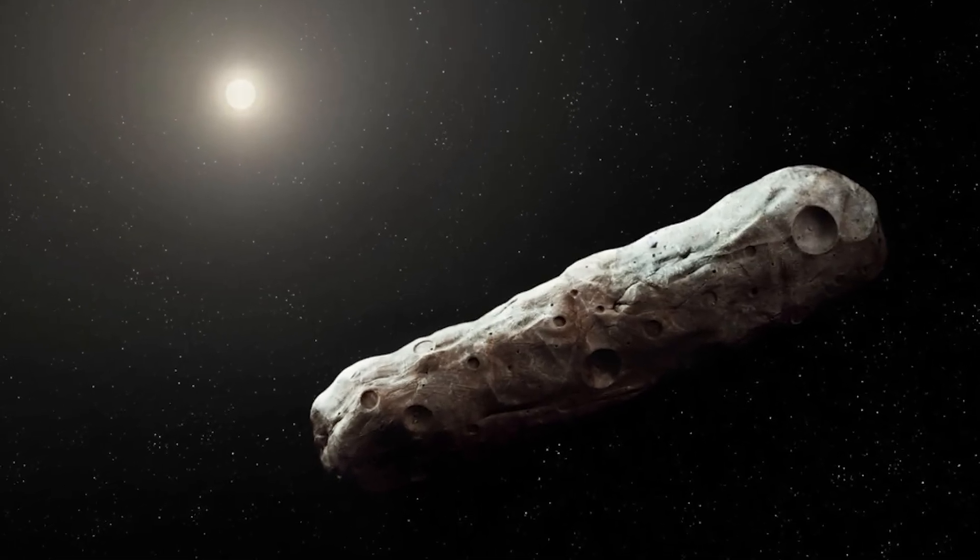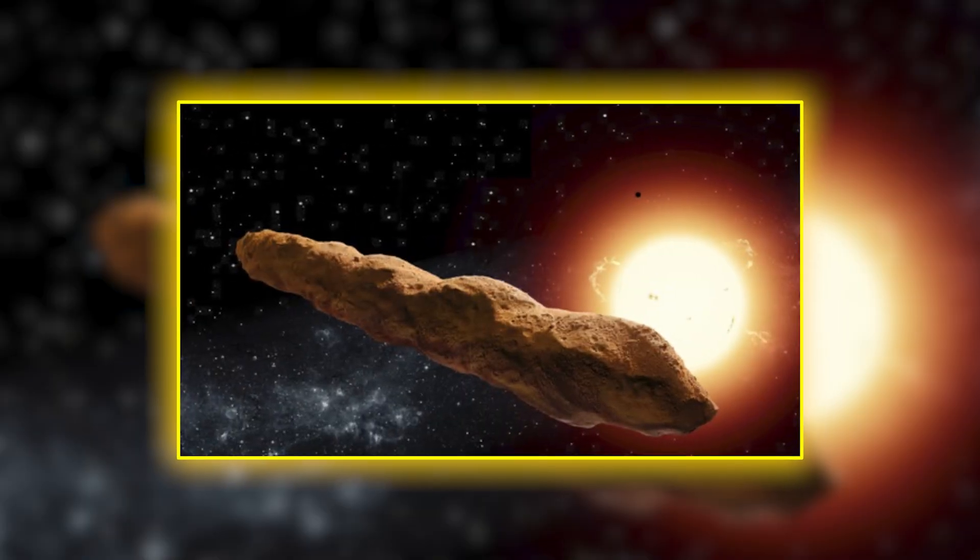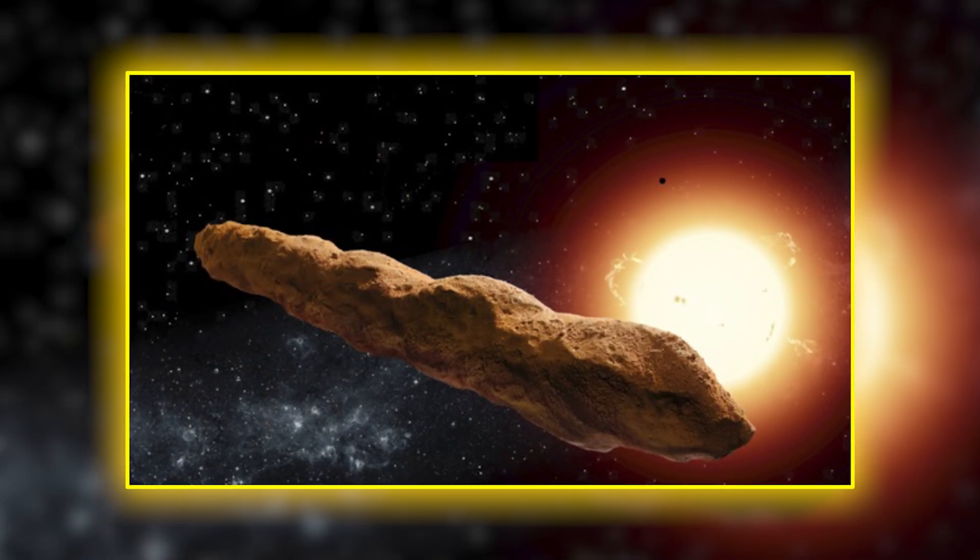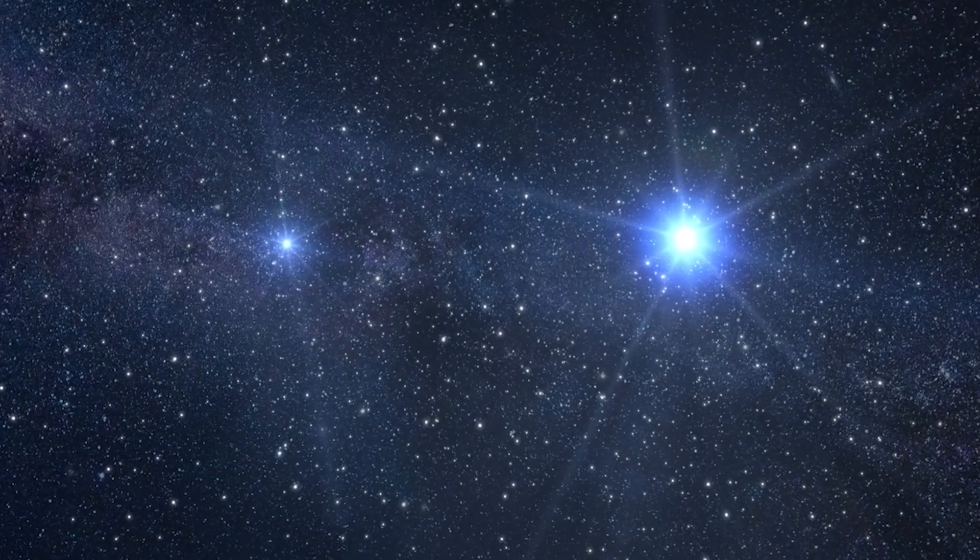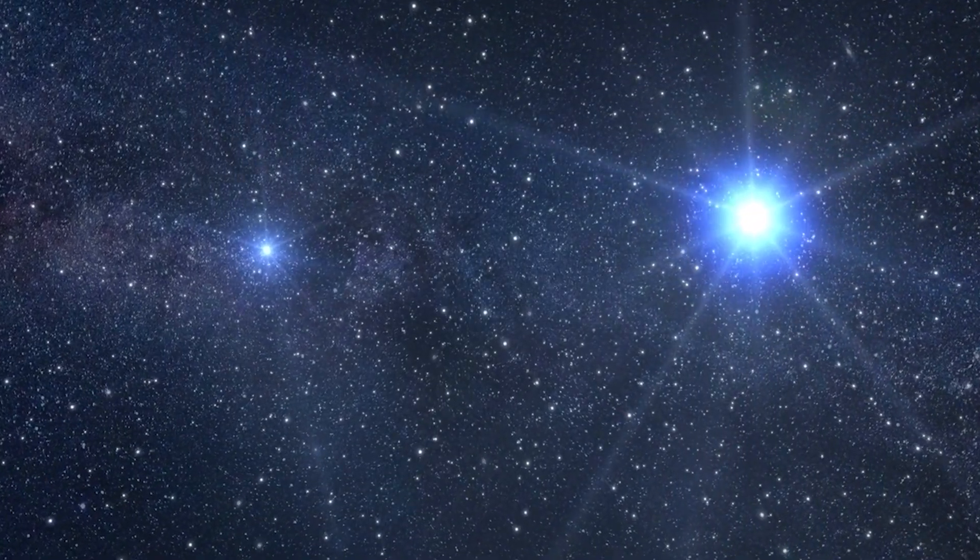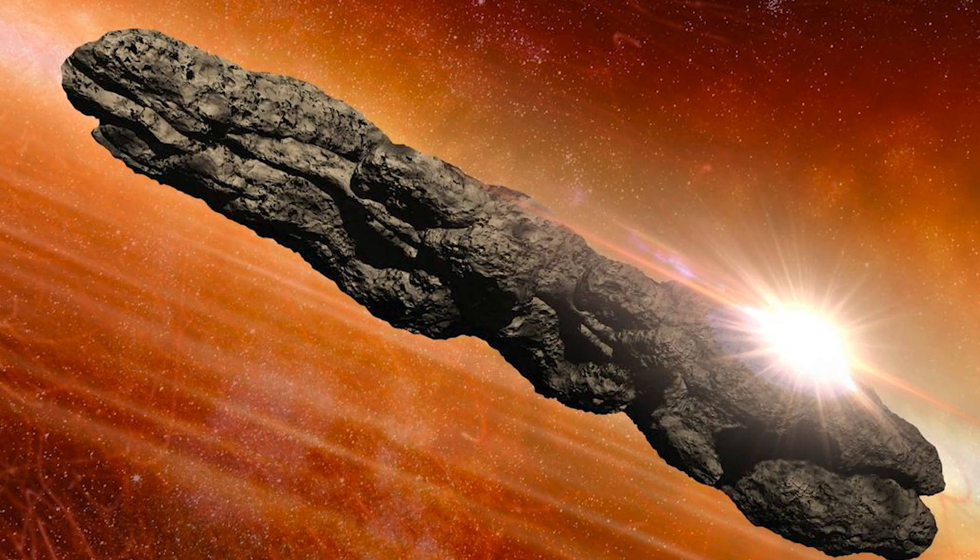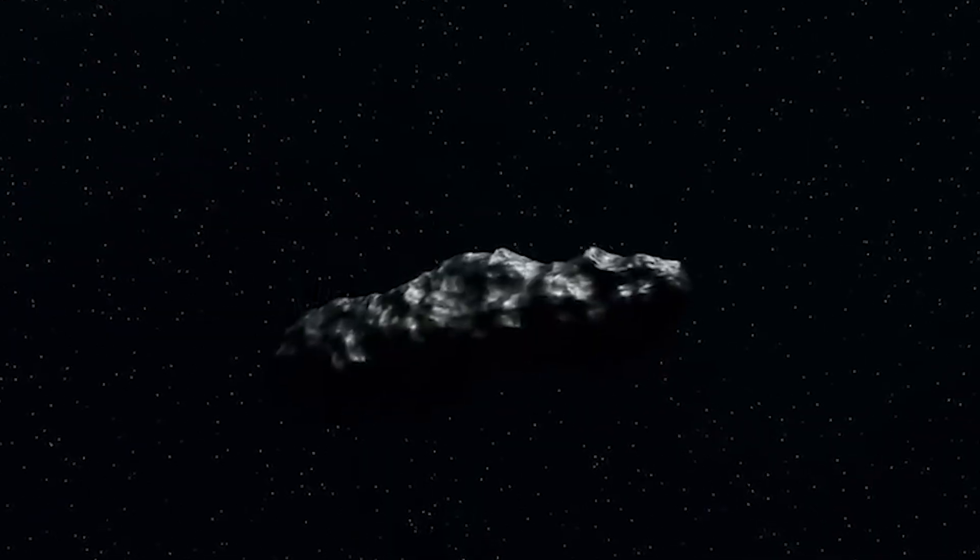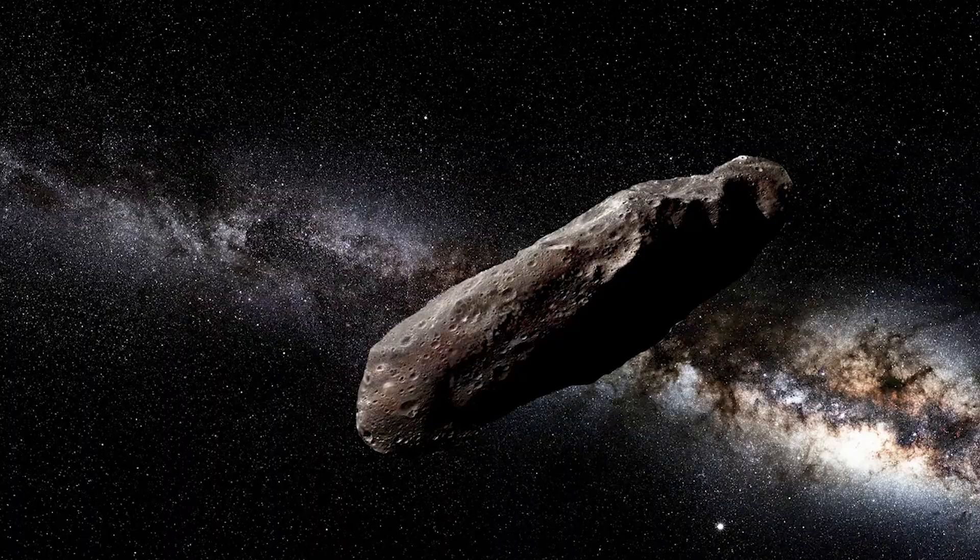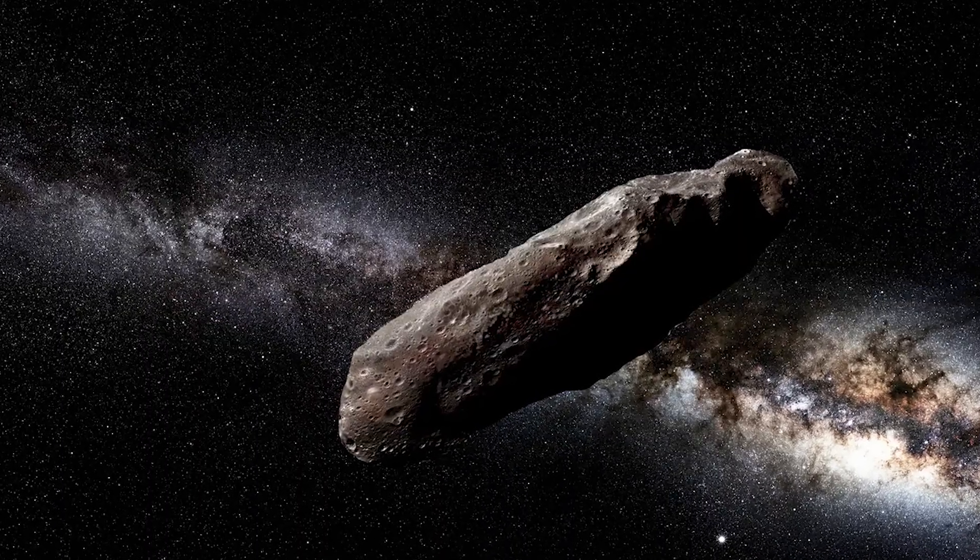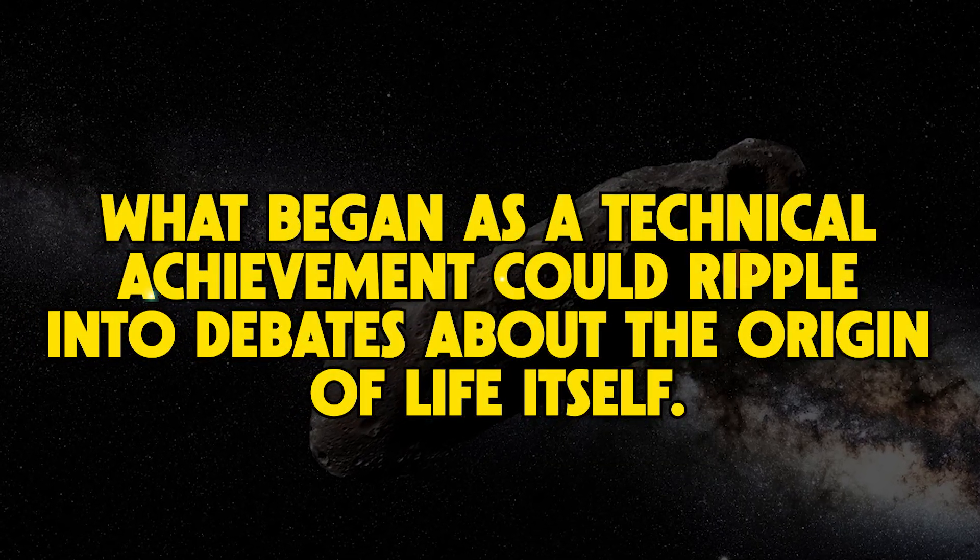What Webb has revealed in its image of 3I-Atlas goes beyond physical description. It raises profound philosophical questions about our place in the universe. If planetary systems across the galaxy produce such objects, then the exchange of material between stars may be more common than imagined. In such exchanges could lie the seeds of panspermia, the idea that life's building blocks might travel between systems. While speculative, the detection of complex organic molecules on interstellar bodies would lend credibility to this possibility. Thus, what began as a technical achievement could ripple into debates about the origin of life itself.